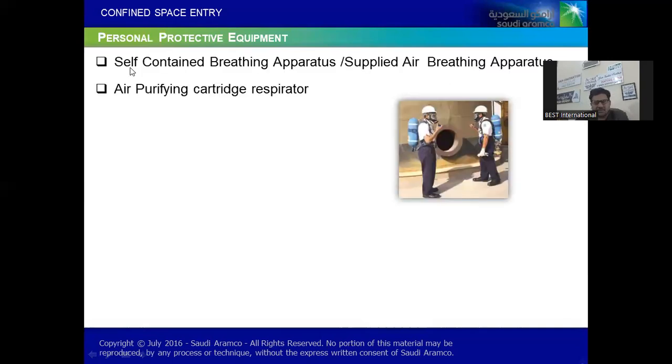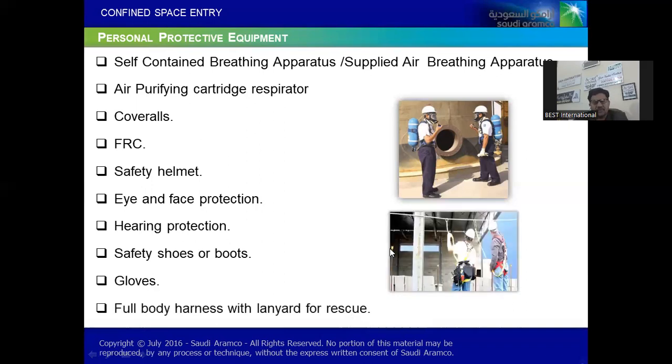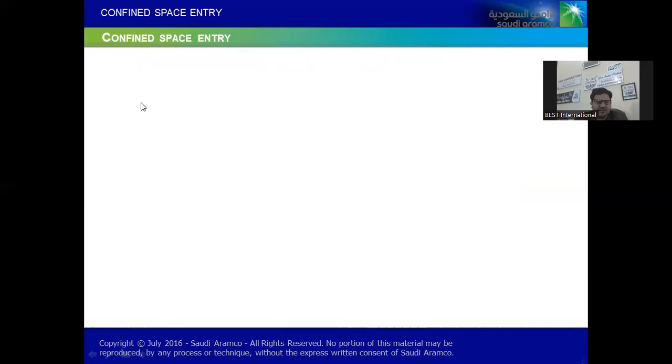Now what PPE we have to use for confined space? Quite common - we must have self-contained breathing apparatus or supplied air breathing, we call it SCUBA or SABA. Air purifying respirator. Look at the picture, because one picture is worth a lot of words. So coveralls, FRC, safety helmet, eye and face protection. Your safety, your life, your responsibility, actually, because Aramco is supporting, client is all the way providing some resources and supporting you. Your company management, they are also providing you some services to support you and to keep you safe. On the other side, HR, admin, HSE, quality, all our service departments, they are serving you just to keep you safe. So make sure you also realize your safety, your responsibility as well. Now safety shoes or boots, gloves, and full body harness with lanyard for rescue.